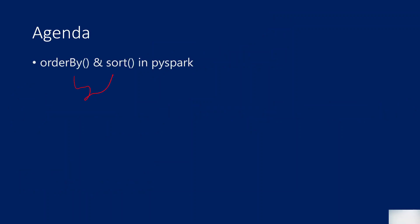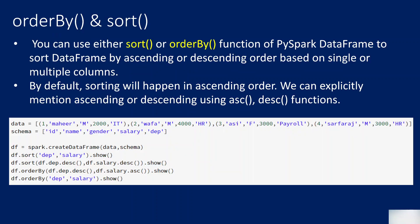Both of these functions will help you to perform sorting on a DataFrame based on one column or multiple columns. Both functions work similarly, so you can use either orderBy or sort — they do the same thing. They help you sort DataFrame data in ascending or descending order. If you don't specify explicitly, by default it will sort in ascending order.